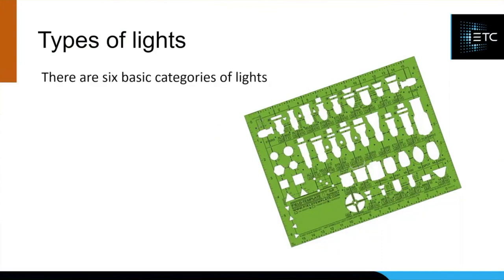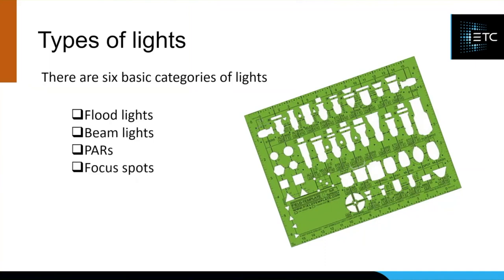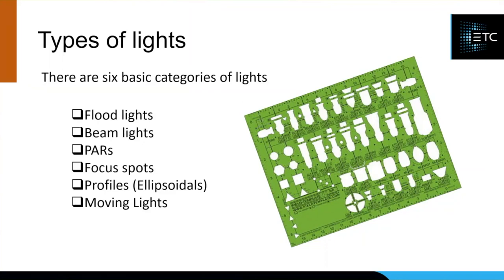I like to think that there are six basic categories of lights that you're likely to come across — well, five categories. Number six you'll see as a sort of subcategory. I'm ranging them from simplest to more complex as we go. The simplest of all lights are floodlights. We then step it up a notch and get beam lights, pars, focus spots, and profiles. We call them profiles in the UK; in America they're referred to as ellipsoidals — the terms are interchangeable. I've also added moving lights in here because they feature so heavily in everything that we do.